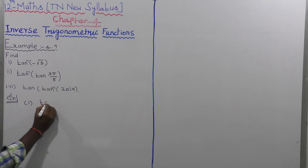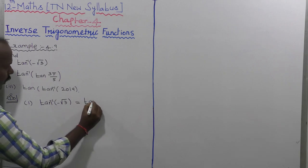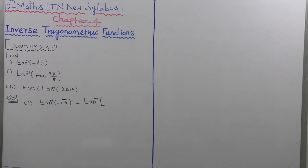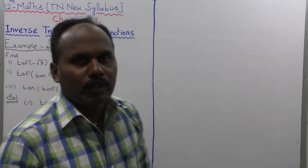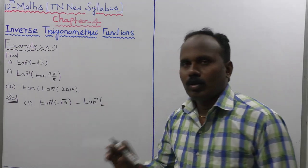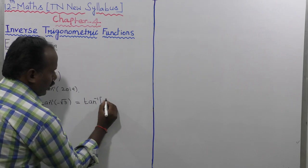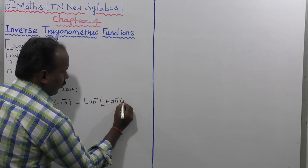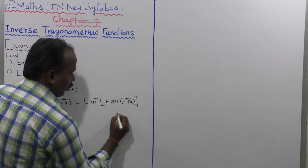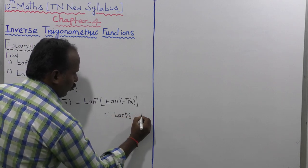The given value is tan inverse of minus root 3. We know tan(π/3) = √3, so tan inverse of minus root 3 becomes tan inverse of tan of minus π/3. Therefore, since tan(π/3) = √3, we have minus tan giving minus root 3.